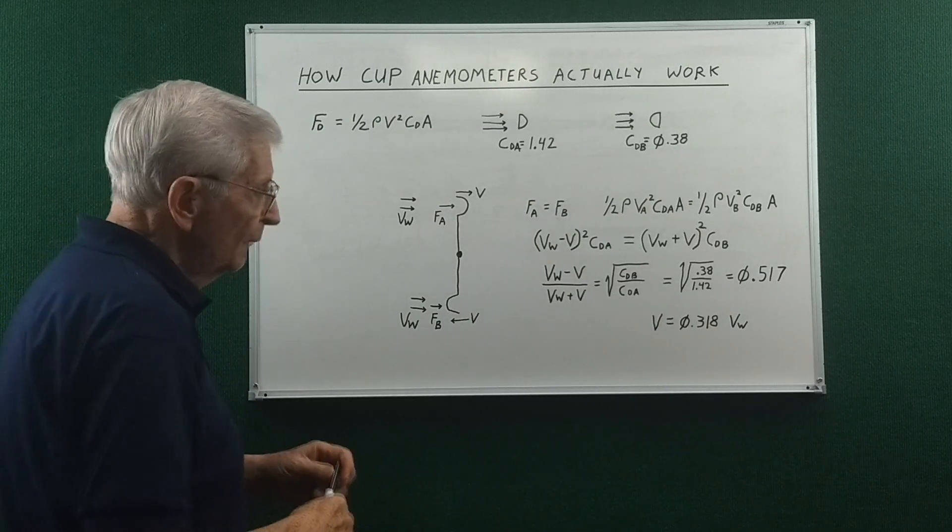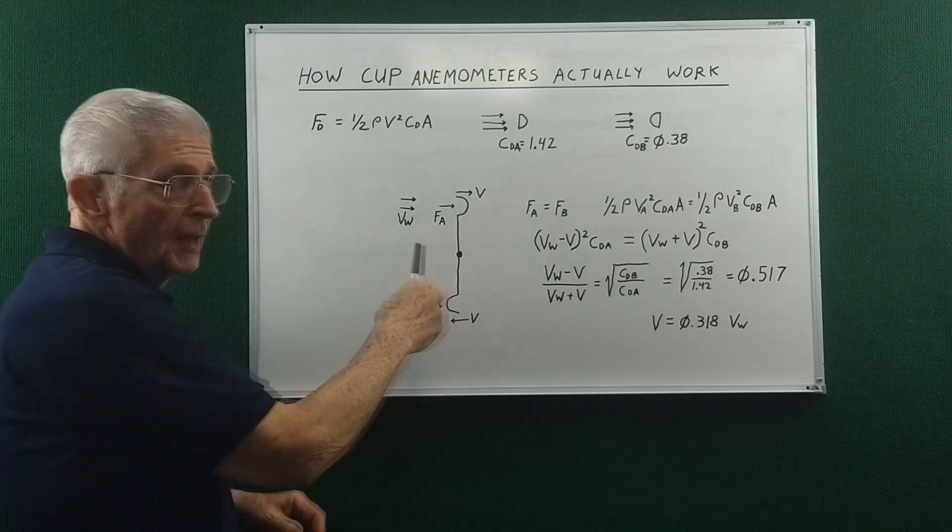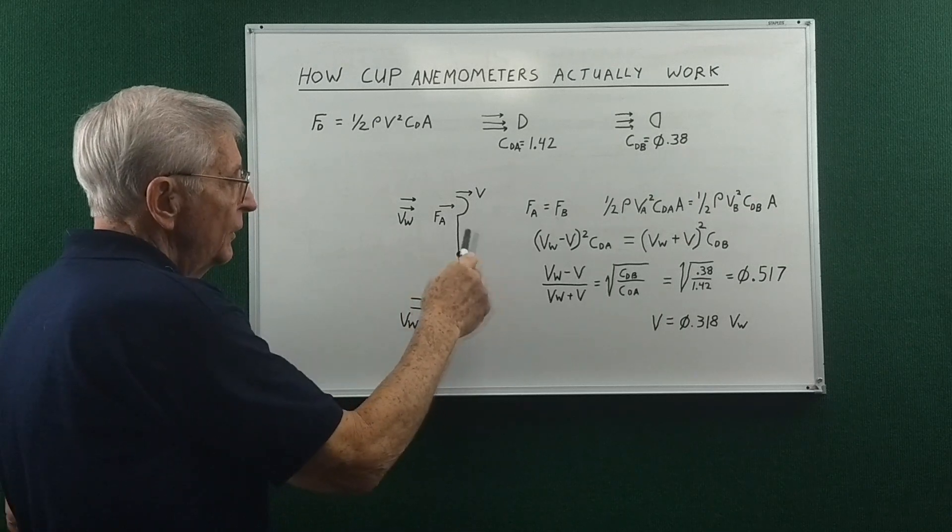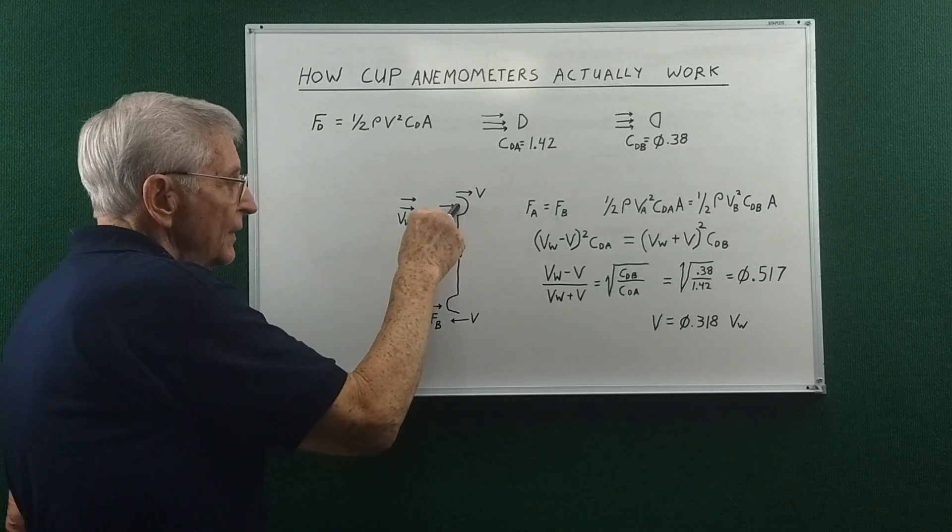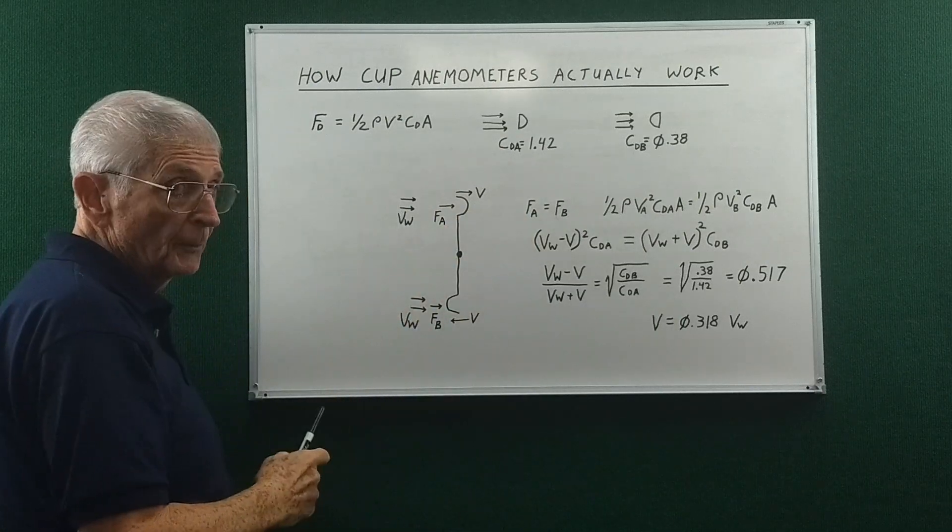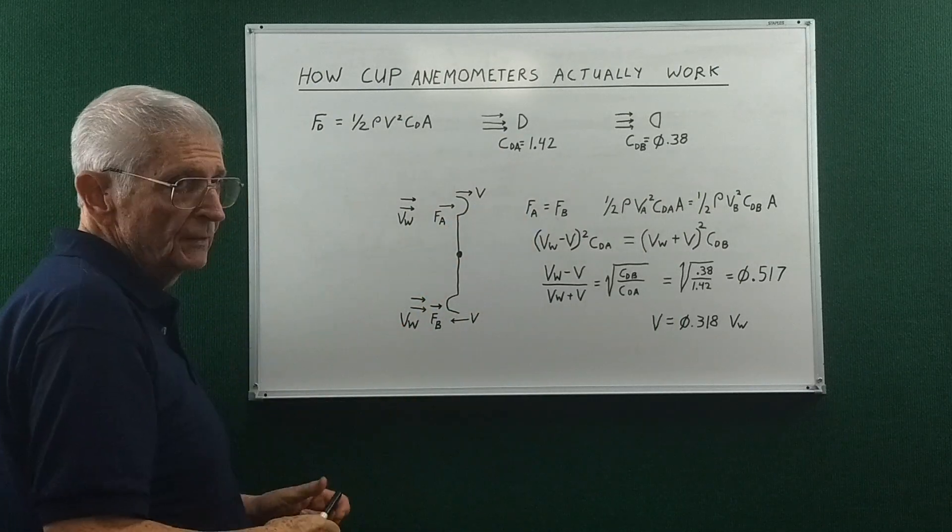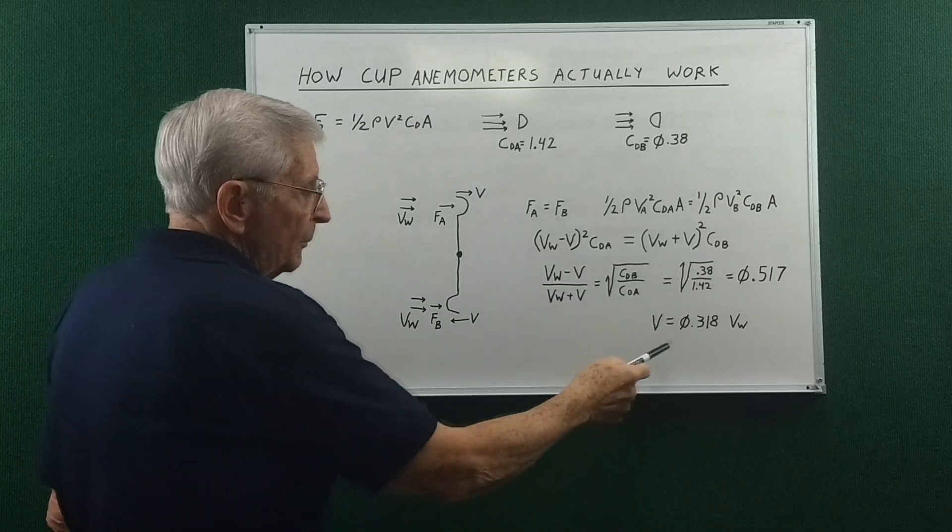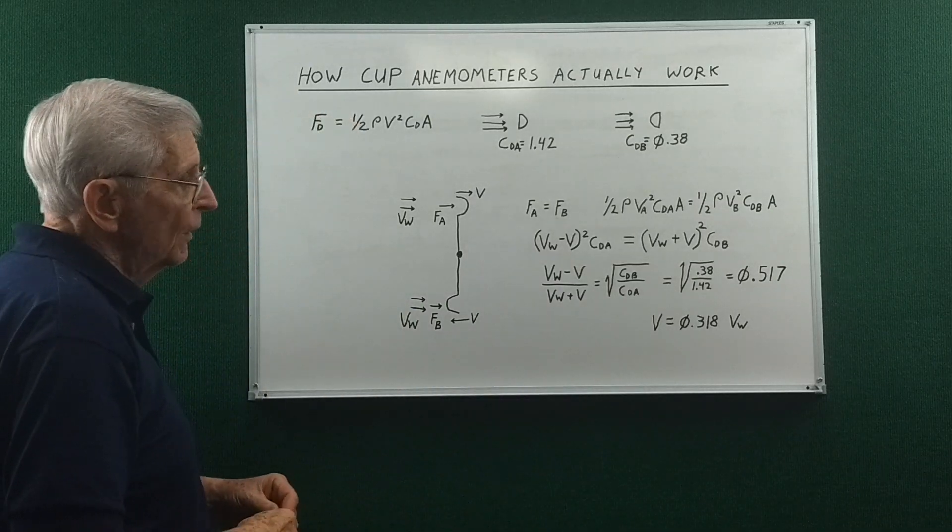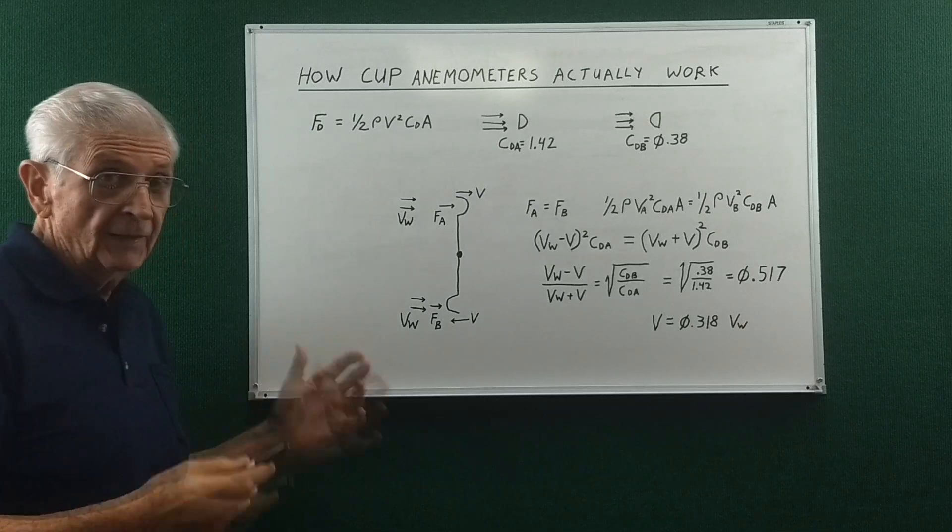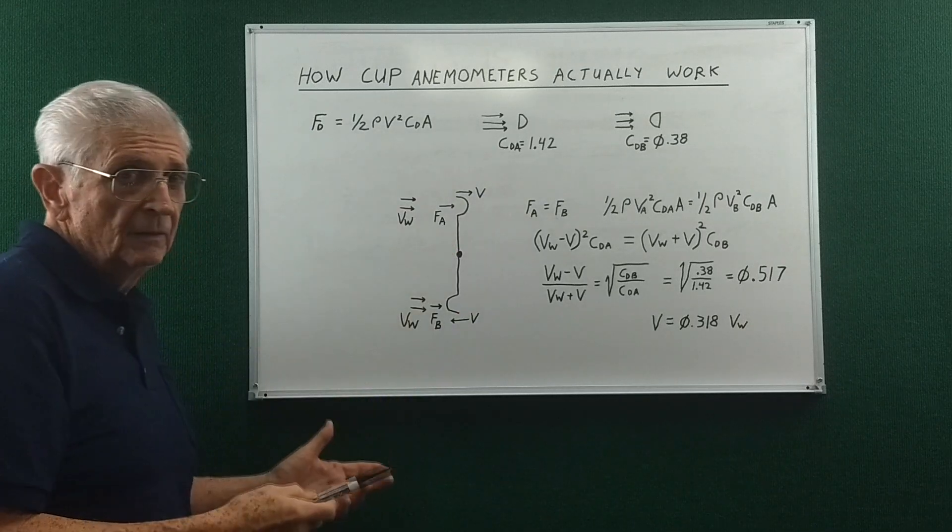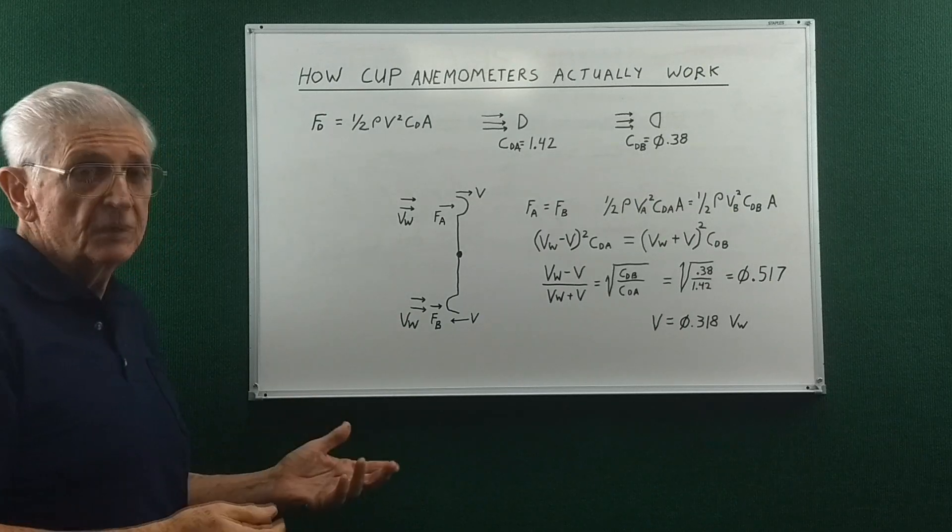Now that would only be true for this two cup setup. If we have the other two cups out here, the force on this cup has to also be able to force those two cups across the wind. So it'll end up actually going slower. So the point actually is that for any given design, the thing has to be calibrated.